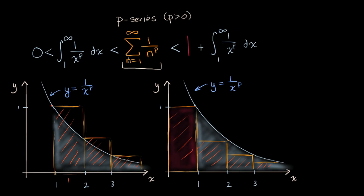Now think about what happens. If we know that this improper integral diverges — it doesn't converge to a finite value — well, the p-series is greater than that, so if this diverges, then the p-series is going to diverge. Similarly, if this integral converges to a finite value, well, one plus that is still going to converge, and so our p-series must also converge. It must go to a finite value.